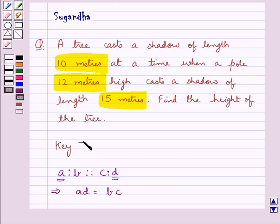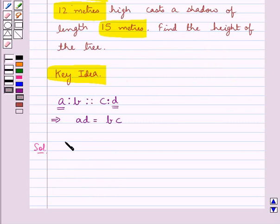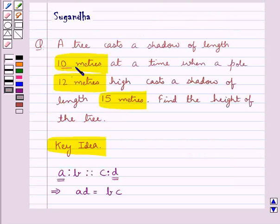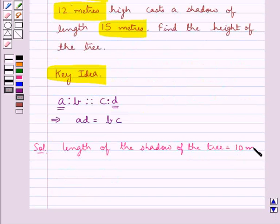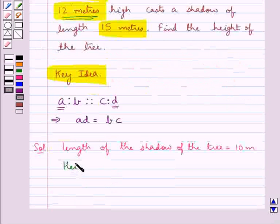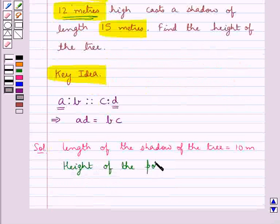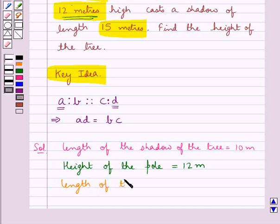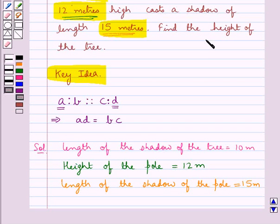This is the key idea that we use in this question. Now let's see the solution. We are given the length of the shadow of the tree as 10 meters. The height of the pole is 12 meters, and the length of the shadow of the pole is 15 meters. We have to find the height of the tree.